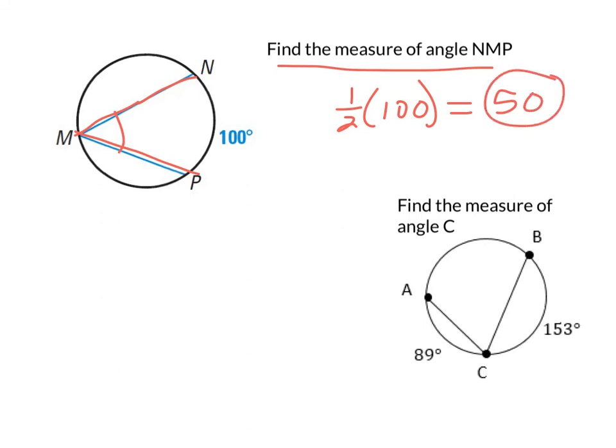This last problem here is just a smidge different. We're asked to find the measure of angle C. Notice that they only used one letter for that. And we're not given the intercepted arc. So it might feel a little bit odd at first. But what we're going to do is we're going to work our way around. No pun intended. So we have a circle here, and the angles of a circle are always 360. So we have 360 degrees all the way around. And they did give us a couple of arcs. So what I'm going to do is I'm going to add up 153 plus 89.